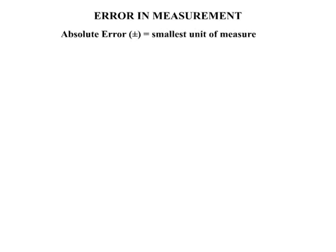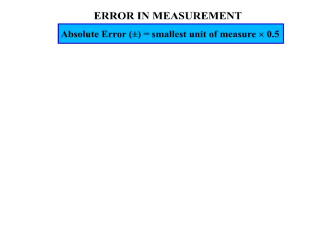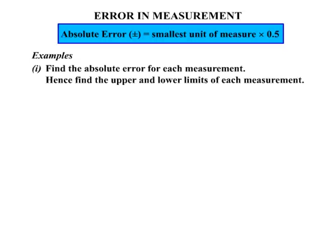In this lesson we work on error in measurement. The absolute error, with a plus and minus, equals the smallest unit of measure multiplied by 0.5. That's an important result. Let's see how it works with some examples.